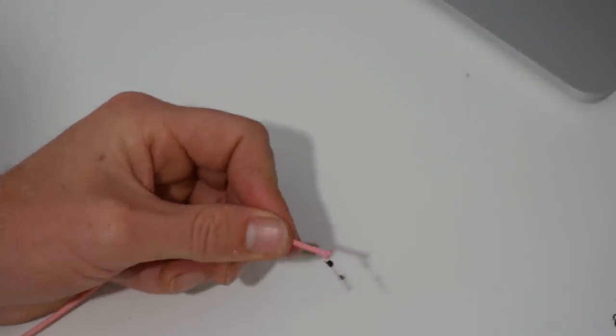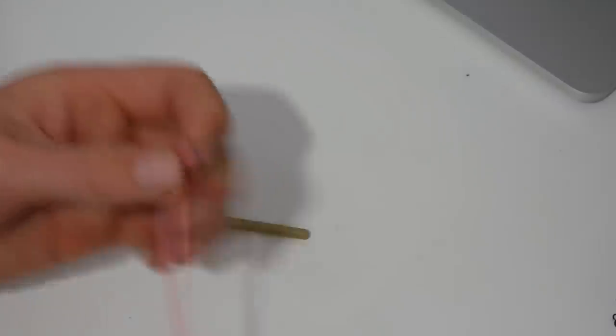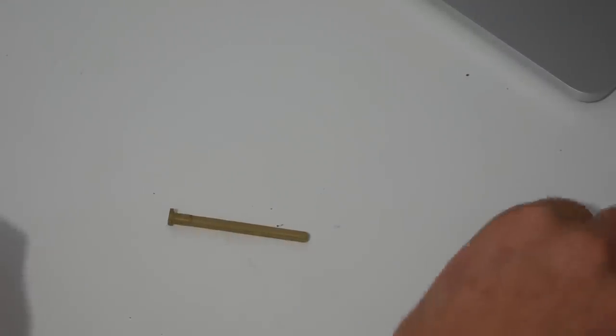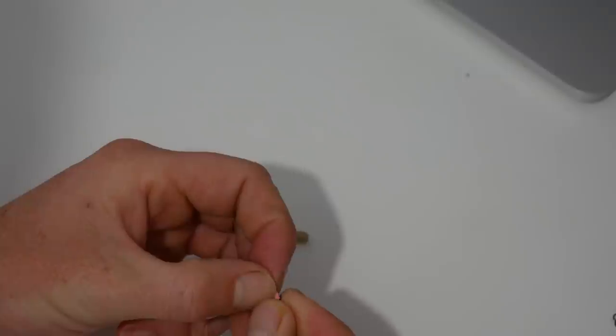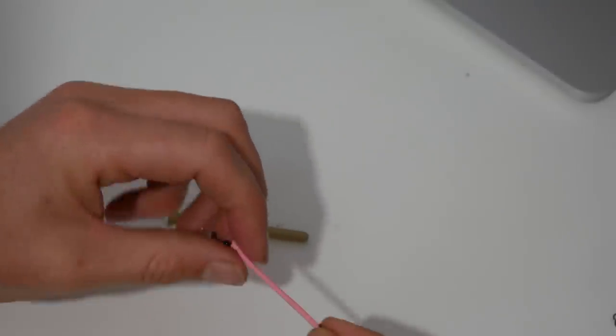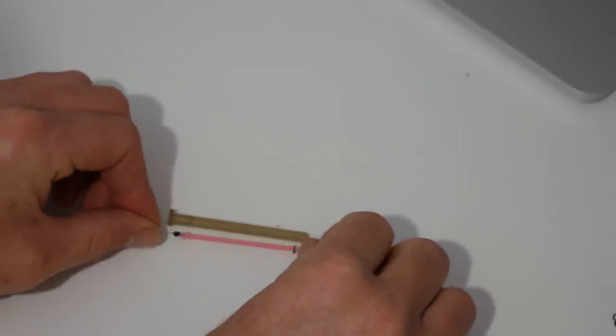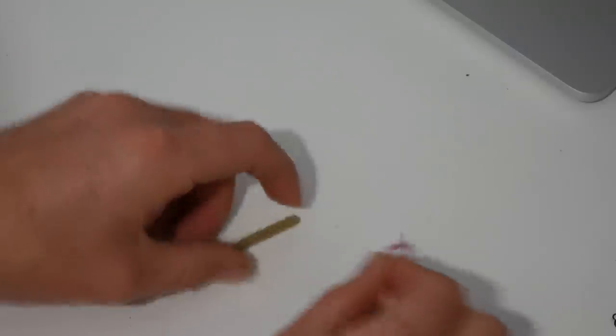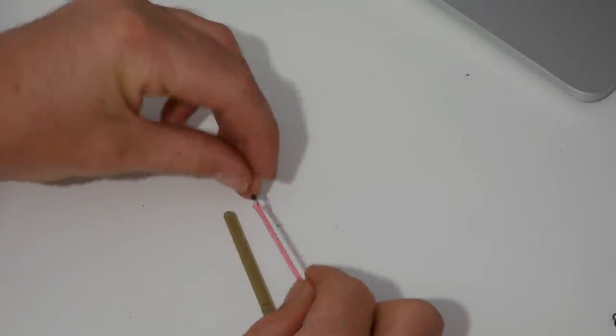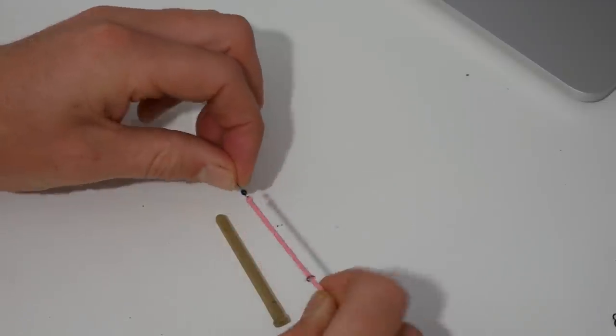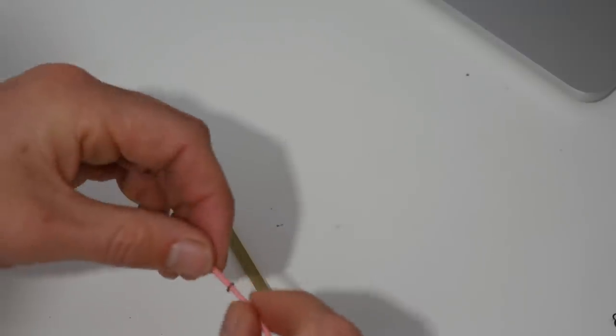So trim that off. Obviously repeat that at the other end. What I like to do is use a little ring at the other end. I think a ring is really nice and a really neat way of attaching your line. So I'm just going to offer that up.